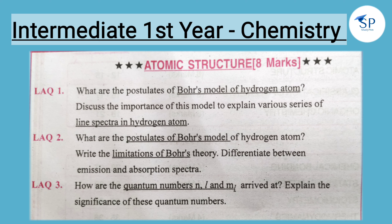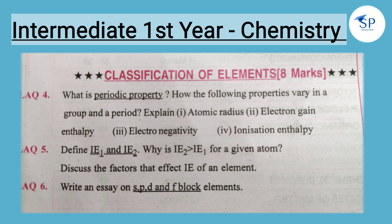Next, three questions from classification of elements. Periodic properties — atomic radius, electronegativity, ionization enthalpy. For example: ionization energy IE1 and IE2, discuss the factors that affect ionization energy of an element. The third question covers s, p, d, f block classification of elements — very important questions.